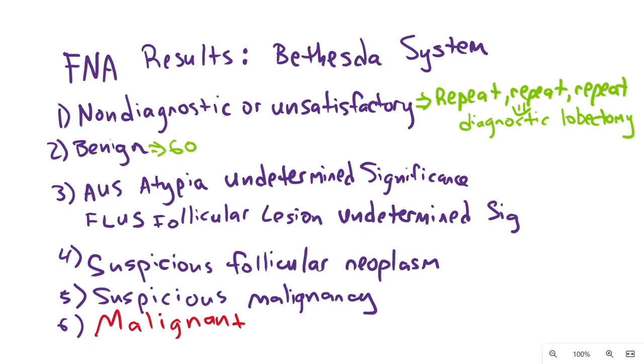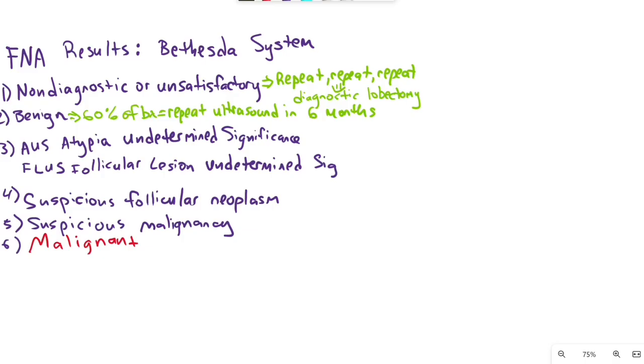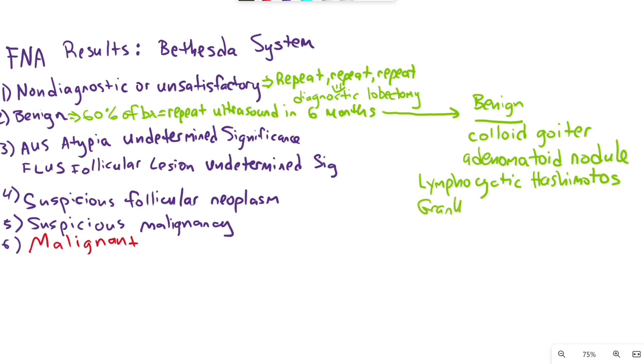Benign FNA occurs in about 60% of cases and needs repeat ultrasound in six months to document stability. Benign things include colloid goiter, adenomatous nodule, lymphocytic Hashimoto's thyroiditis, granulomatous thyroiditis, and benign cysts. Clearly, benign nodules such as a colloid goiter need no further investigation other than the six-month follow-up thyroid ultrasound to document stability and size.